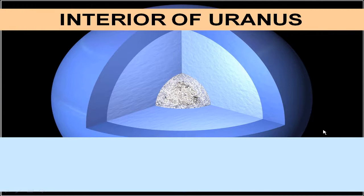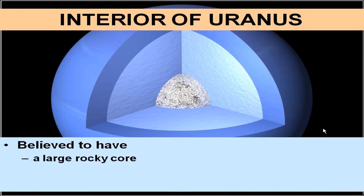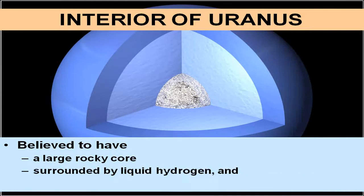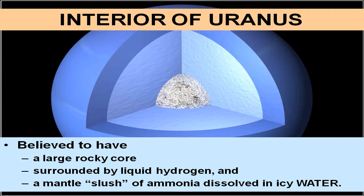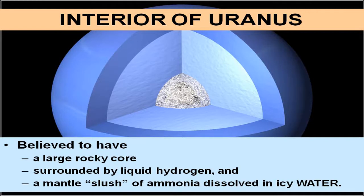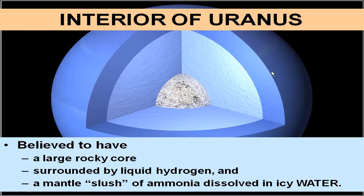If we were to look into the interior of Uranus, we would believe there is a large rocky core, immediately surrounded by liquid hydrogen, and then a mantle comprised of ammonia and water — an icy water-ammonia slush — before reaching the outer atmosphere, which is comprised mainly of hydrogen and helium.